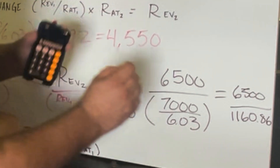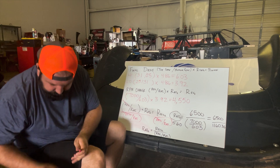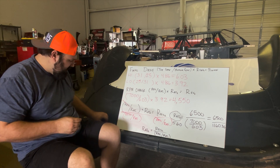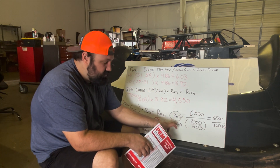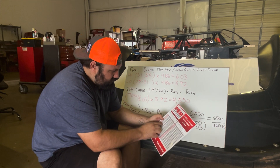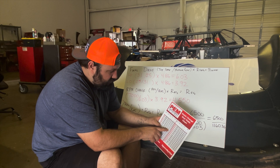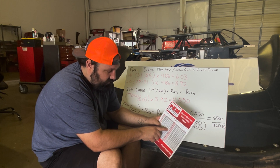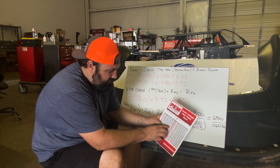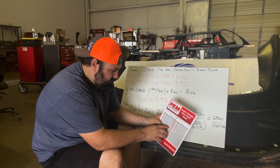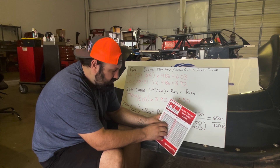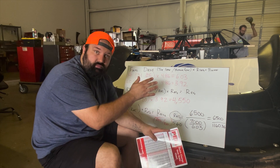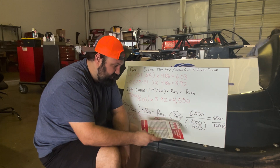Now we can pull up our gear chart. Knowing we have a 4.86 ring and pinion, we have a 6.03 in the car and we want to go to a 5.60. The closest options are 5.63, which is set 17, or 5.55, which is set 7A. Set 17 is a 19-22 gear set and set 7A is a 23-21 or 21-24. So 5.55 or 5.63 are as close as we can get.